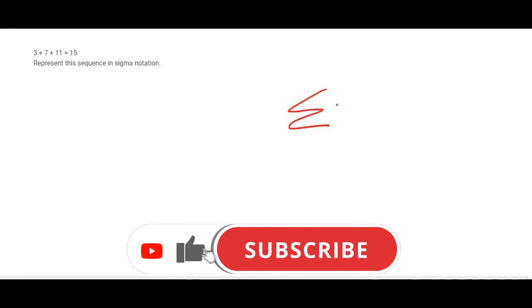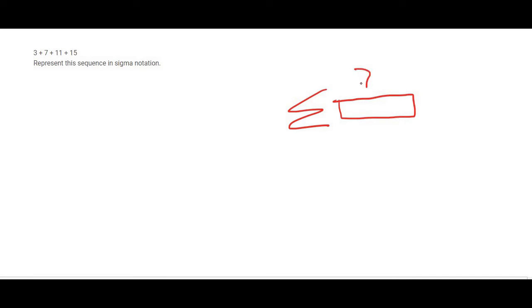The way that this works is that over here we are going to put whatever Tn is. So we need to come up with a general formula for Tn. To do that we have to know if this is an arithmetic or a geometric sequence.